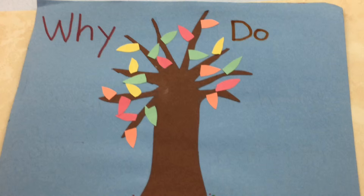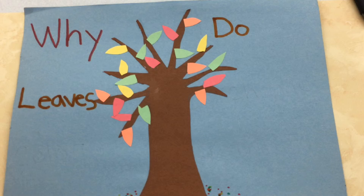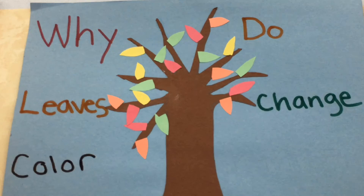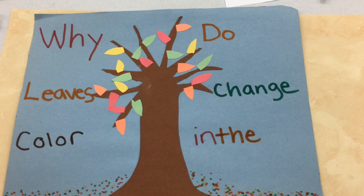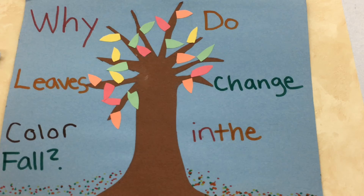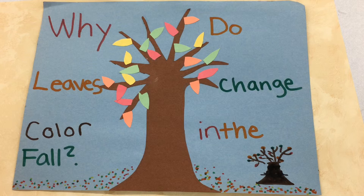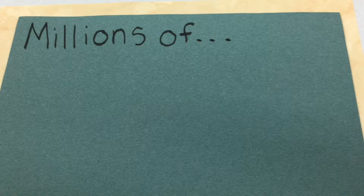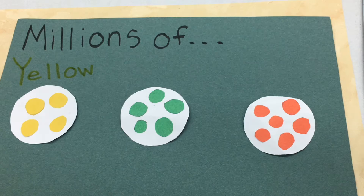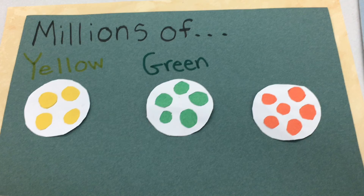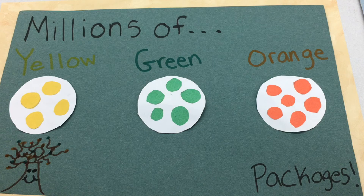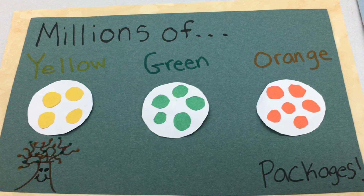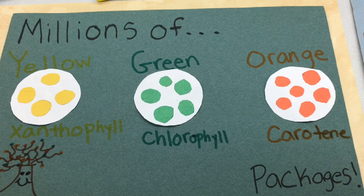Why do leaves change color in the fall with Mr. Tree? Inside the leaves, there are millions of yellow, green, and orange packages that are called Xanthophyll, Chlorophyll, and Carotene.